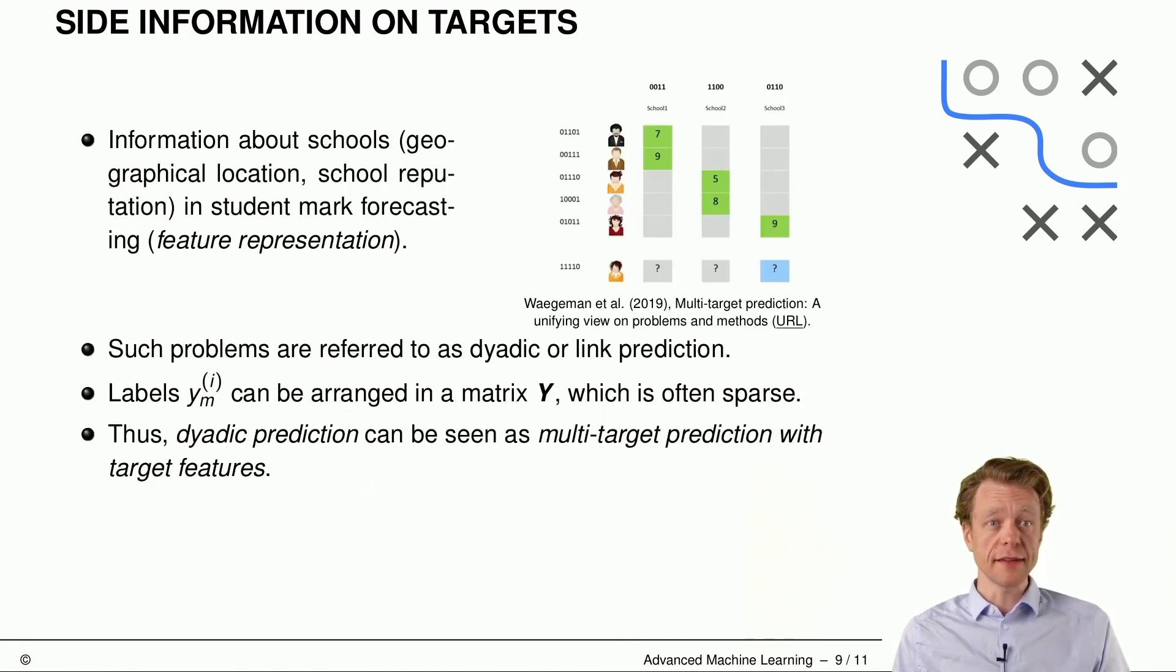And a third kind of information is these feature representations. So perhaps we know something about those schools, that they have some geographical location which is closer to other schools, closer between some schools than between others, and so on. These problems can be referred to as dyadic or linked prediction. And again, we can arrange the labels in the matrix, which then may often be sparse. And then we can view this dyadic prediction as a multi-target prediction with target features.